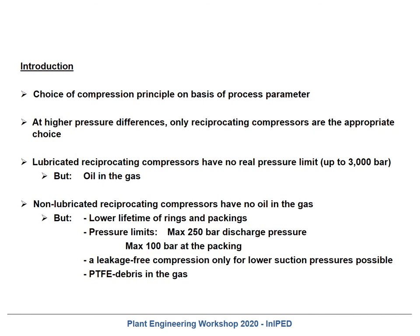The choice of compression principle is based on process parameters. At higher pressure differences, only reciprocating compressors are the appropriate choice. We have lubricated reciprocating compressors which have no real pressure limit — you can go up to 3000 bar — but they must be lubricated and therefore you will see oil in the gas. On the other hand, you can choose a non-lubricated reciprocating compressor which has no oil in the gas, but the disadvantage is a lowered lifetime of rings and packings, and there are currently some limits.